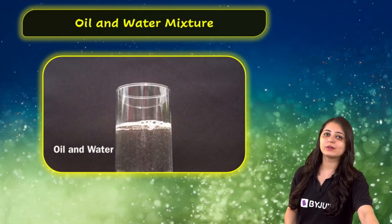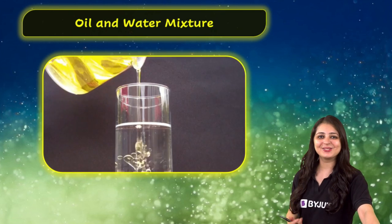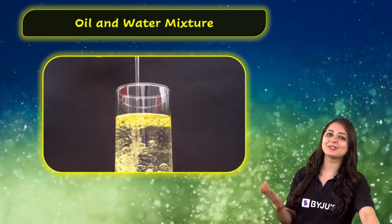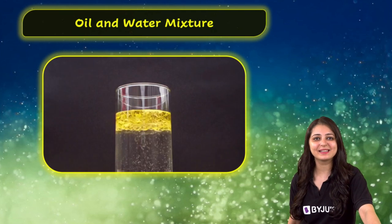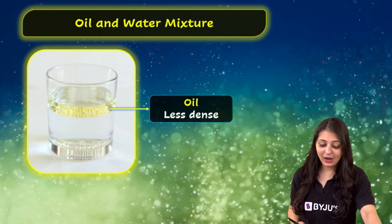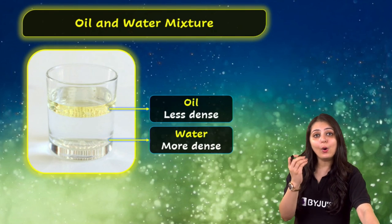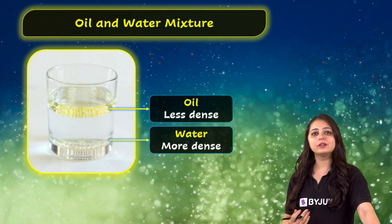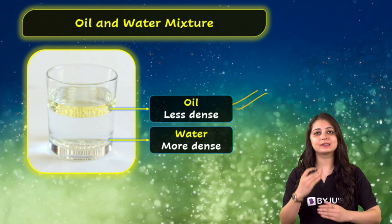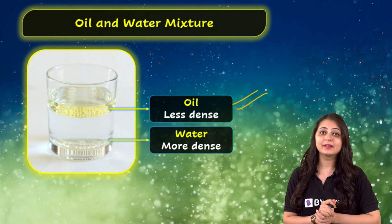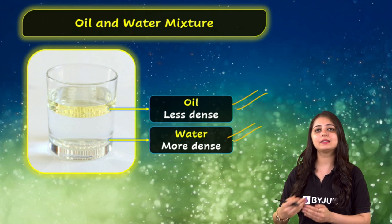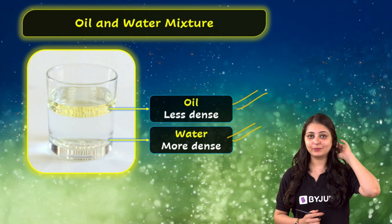Here we have a glass of water and we are adding oil to it. Oil and water are insoluble liquids, so they split into two distinct layers as you can see — different layers have formed. Oil, being lighter than water, floats on top and forms the upper layer. Water, being denser, settles at the bottom.